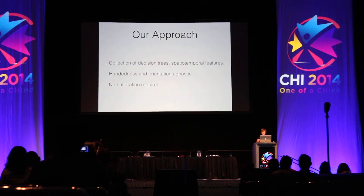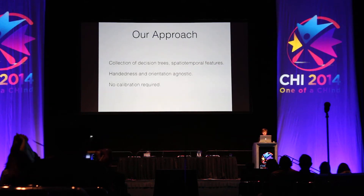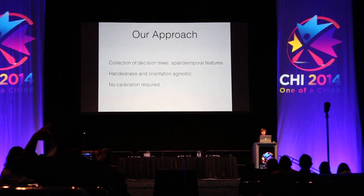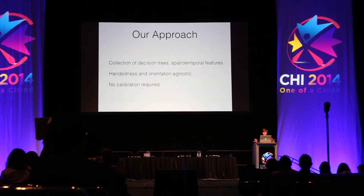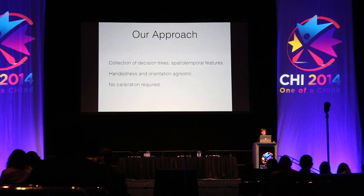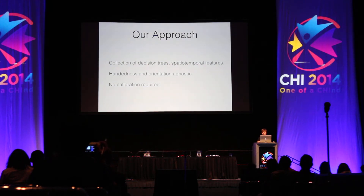Rather than using heuristics, our approach leverages a collection of machine learning models trained on features that describe how a given touch and the points around it change over time. The advantage is that it's agnostic to handedness and device orientation, and doesn't require any special calibration.